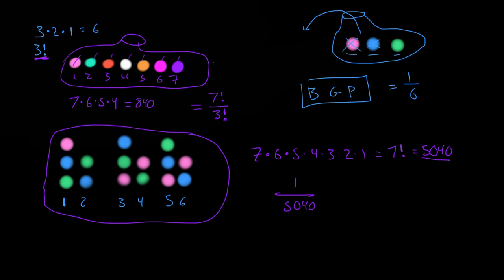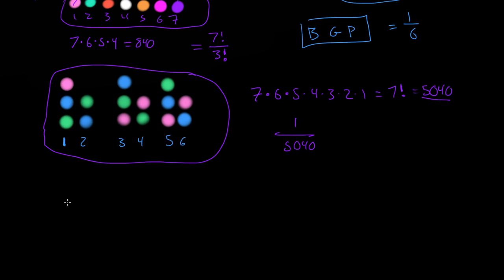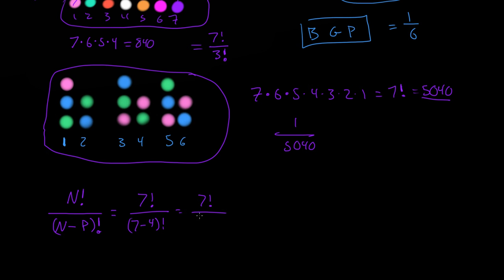So what we can do instead: let's say we have n number of balls — that means we have n factorial number of outcomes — divided by n minus the number of things we're going to pick, p, and then we take the factorial of that. So let's test that: seven factorial divided by (seven minus four) factorial — that's seven factorial over three factorial — and that's just what we have up there.